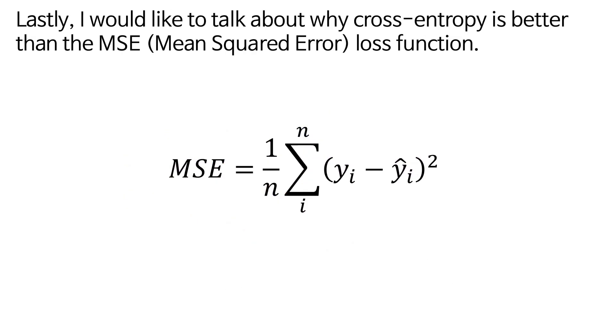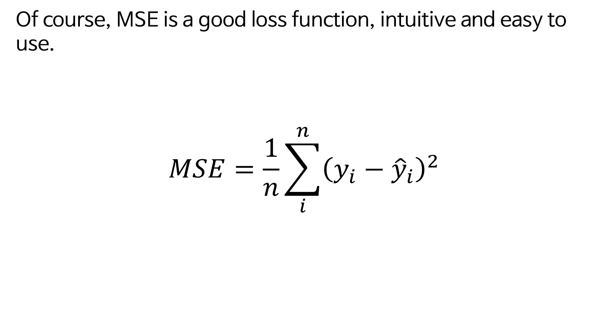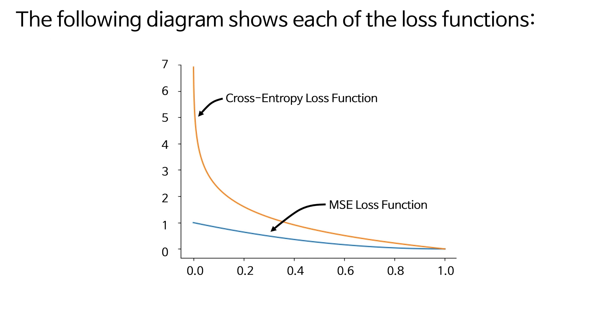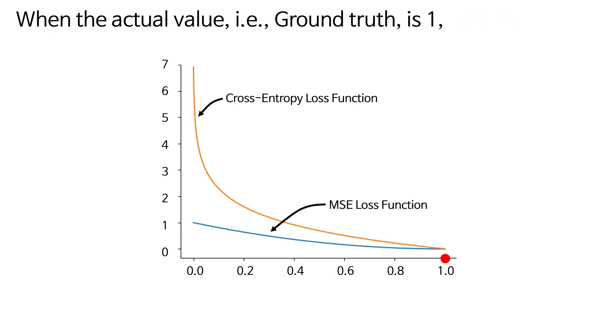Lastly, I would like to talk about why cross-entropy is better than the MSE loss function. Of course, MSE is a good loss function, intuitive and easy to use. However, the reason why cross-entropy is better is because it shows the loss more effectively than MSE. The following diagram shows each of the loss functions. When the actual value, ground truth, is 1,